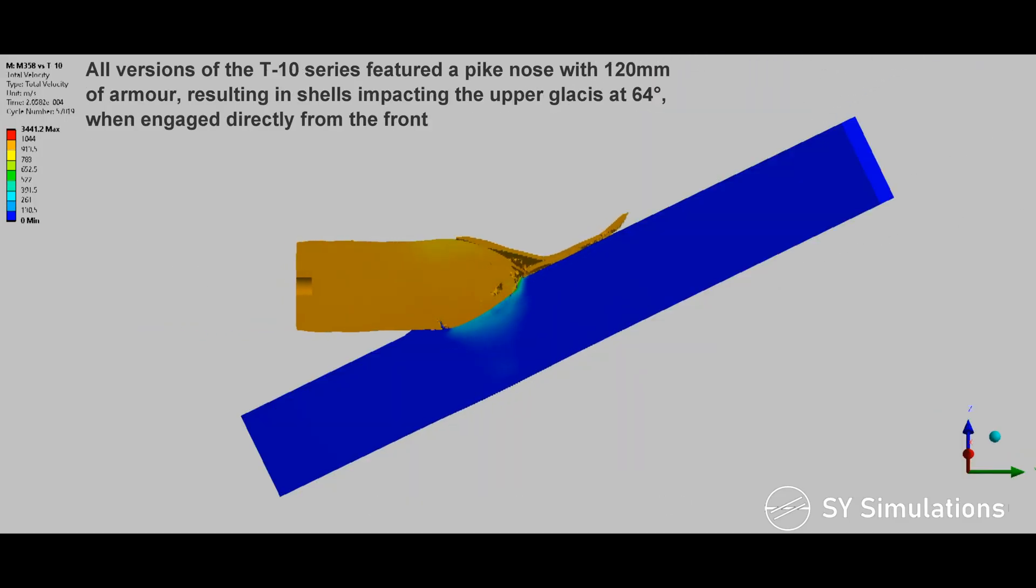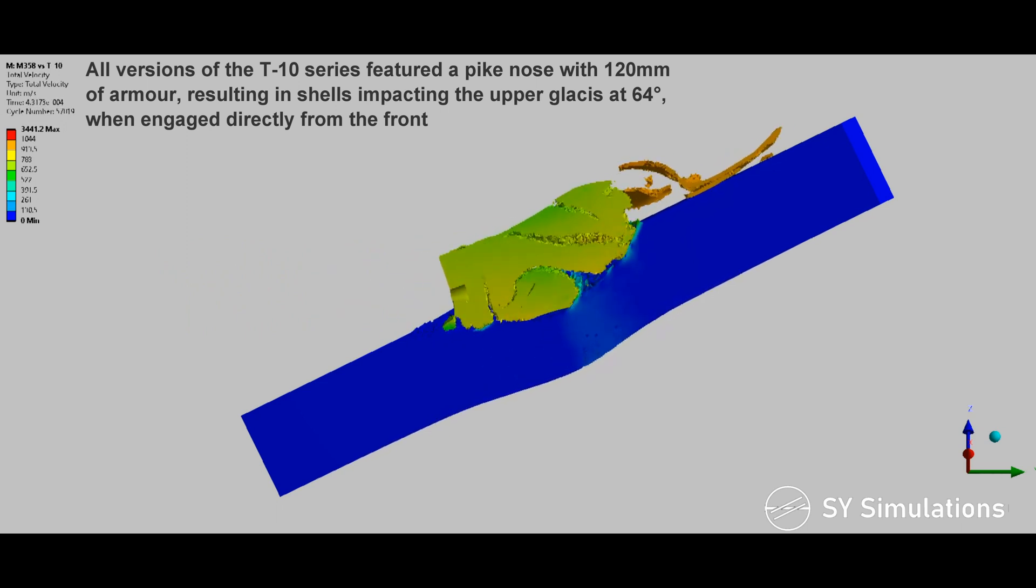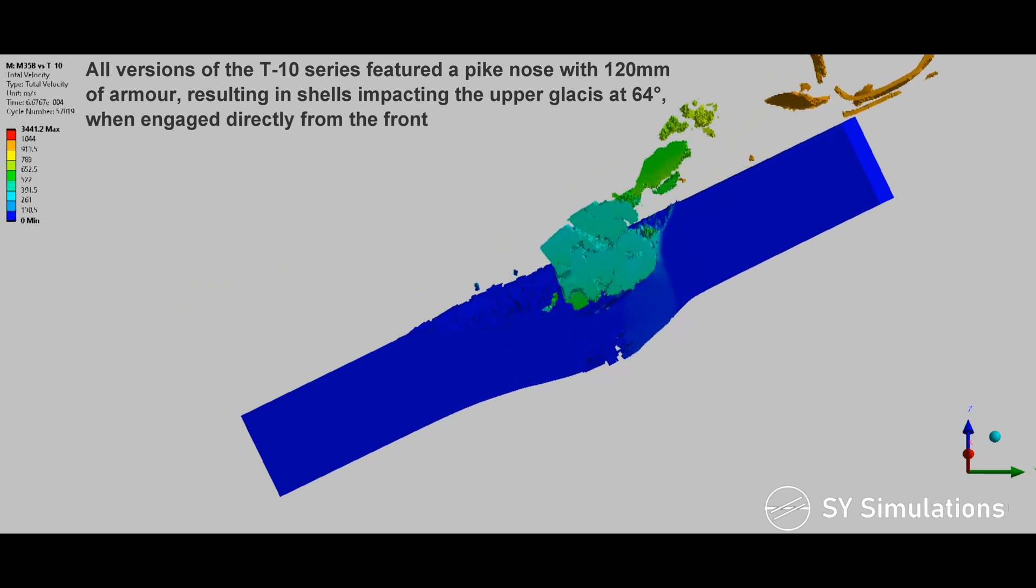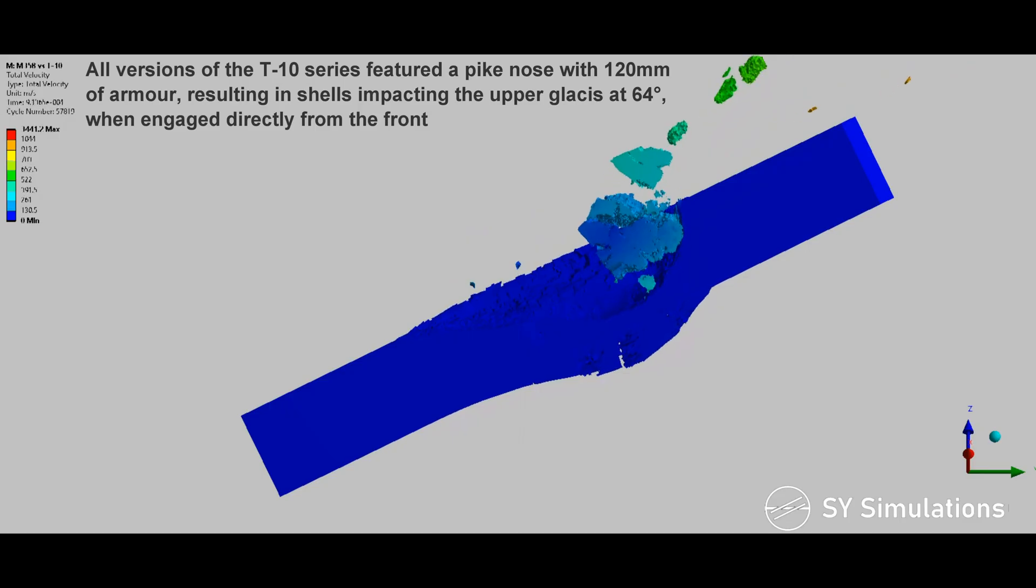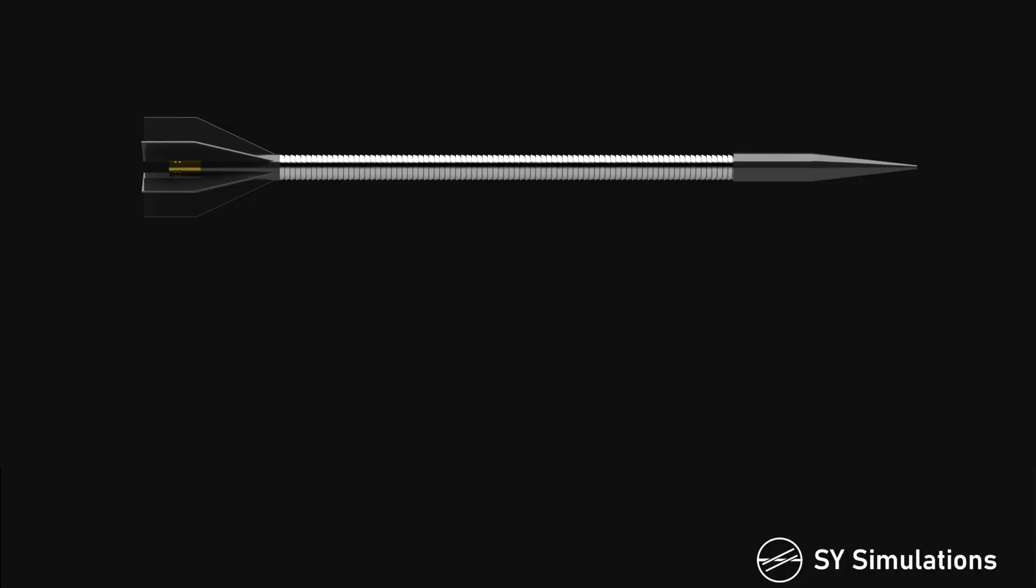All versions of the T-10 series featured a pike nose with 120mm of armor, resulting in incoming shells striking the upper glacis at 64 degrees when engaged directly from the front.